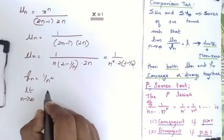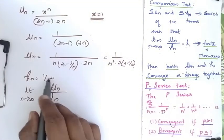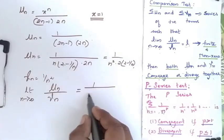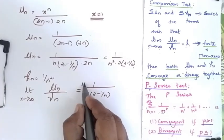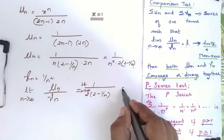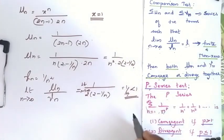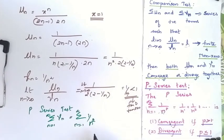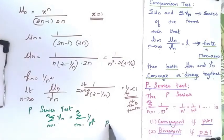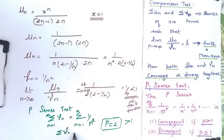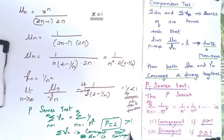The limit as n tends to infinity of un by vn gives 1 divided by 2(2 minus 1/n). Substituting the limit I get 1/4, which is finite and non-zero. Since vn = 1/n² and P equals 2, which is greater than 1, summation vn is convergent by the P-series test. This implies summation un is also convergent for x equal to 1.